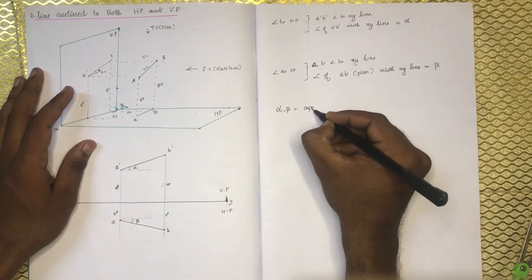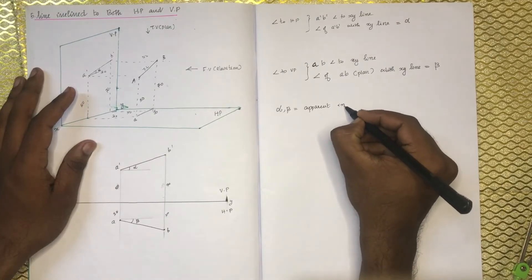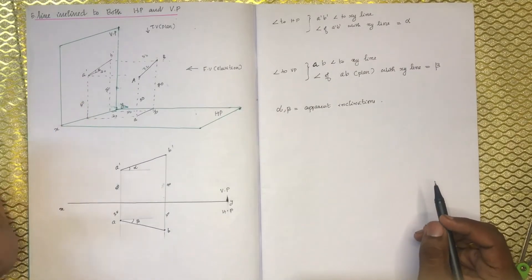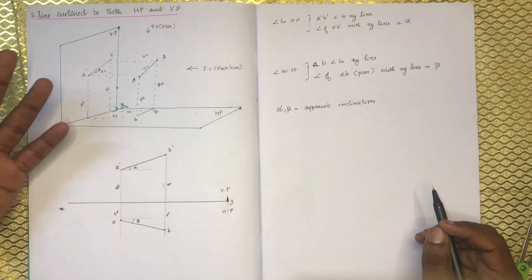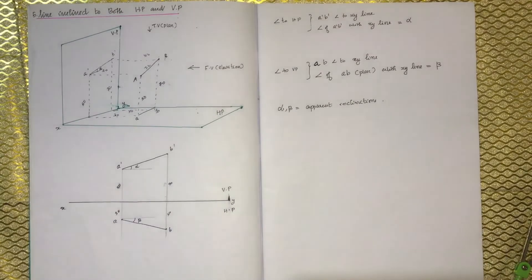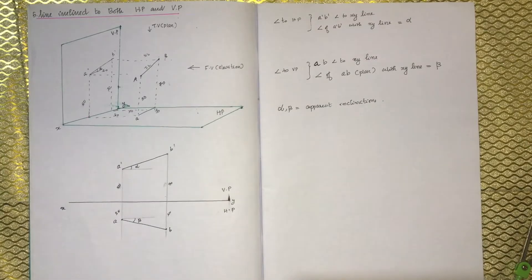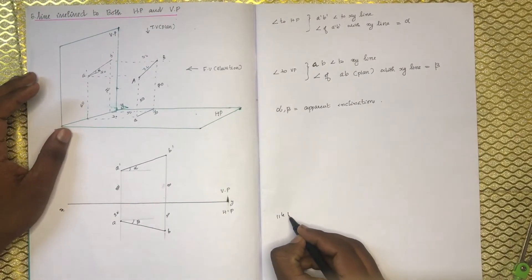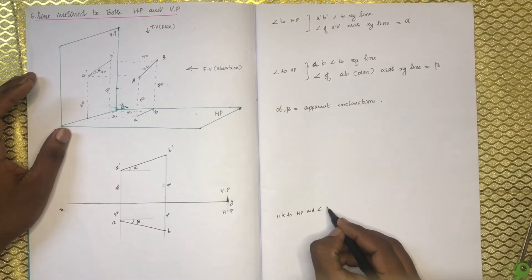Inclination of beta. Now if we call this alpha and beta, they are not the true inclinations — they are apparent inclinations. This is not the true length; you have to find the true length. AB is not the true length. If you find the true length, the line is parallel to the reference line.